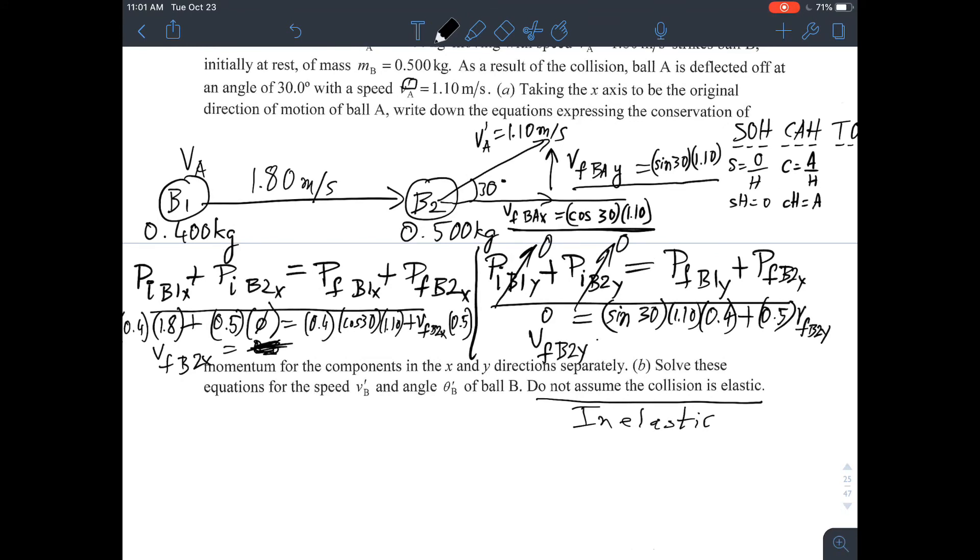Final velocity of ball two in the Y dimension, just one unknown, and you'll end up with something, simple math. So, we know the X and Y of the... the original question was, taking the X axis to be the original direction of the ball, which is what I did, I assumed 1.80 meters per second is in the X direction.